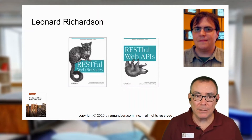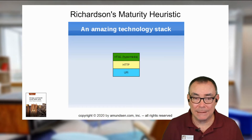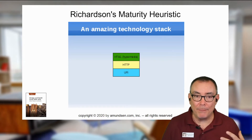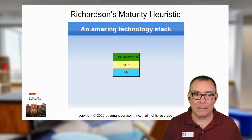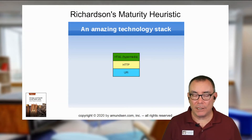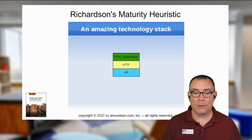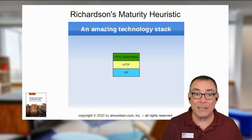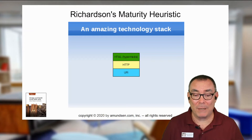Leonard's maturity heuristic looked like this. He was talking about how amazing it was that we had at our disposal this stack of technology that would allow us to do amazing things — that we could address everything with the URI, we could use methods to change or read or write those elements, and that we could actually embed instructions of URIs and methods into messages. That's what he called HTML hypermedia.